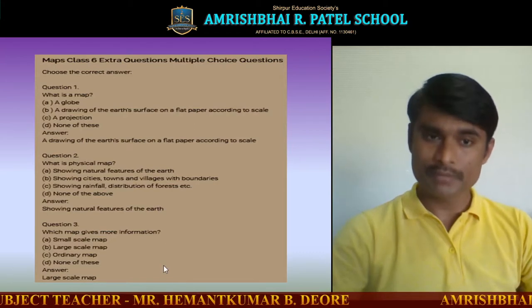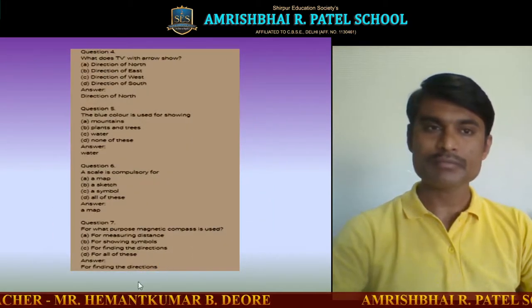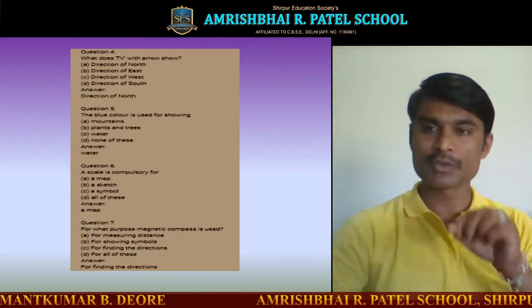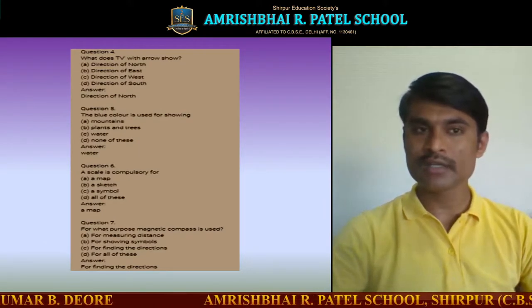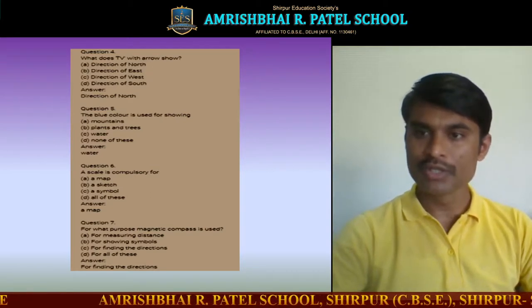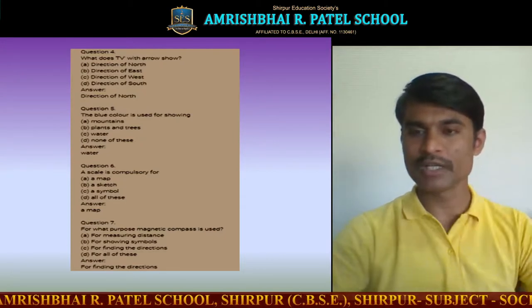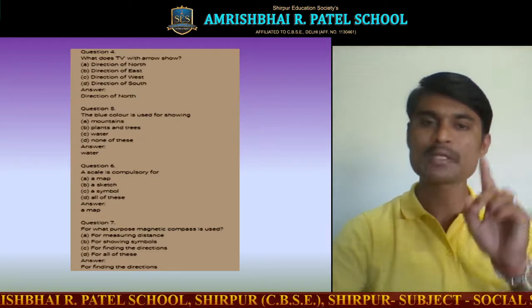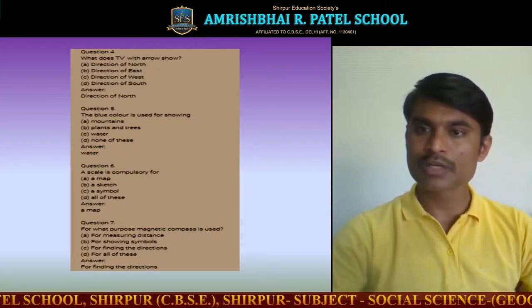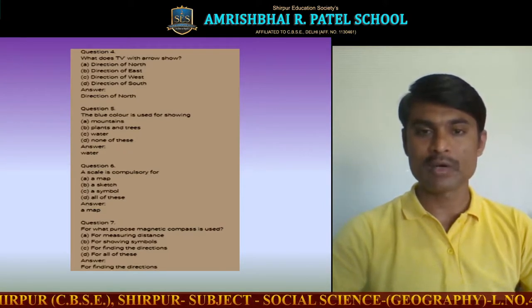Question number three: which map gives us more information? The large scale map is the map which gives us more information. Question number four: there is an arrow on the map — that arrow shows the north direction. Any map has an arrow showing the north direction.